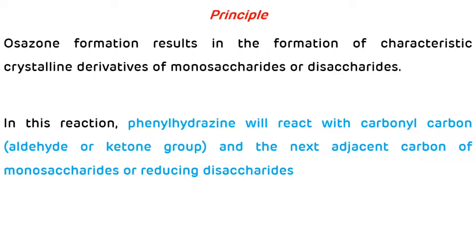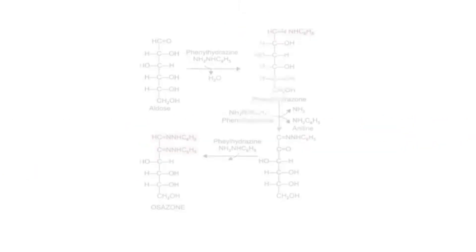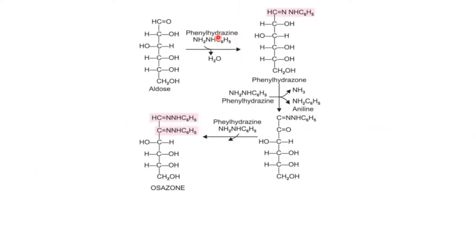Phenylhydrazine, after reacting with monosaccharides or reducing disaccharides, first forms phenylhydrazone with the elimination of a water molecule. This phenylhydrazone, after reacting with two more molecules of phenylhydrazine, leads to the formation of osazone, with the elimination of ammonia and aniline.